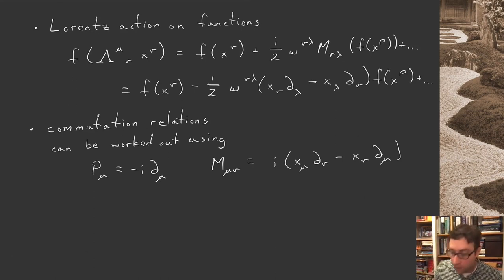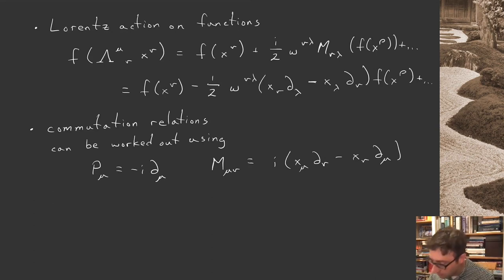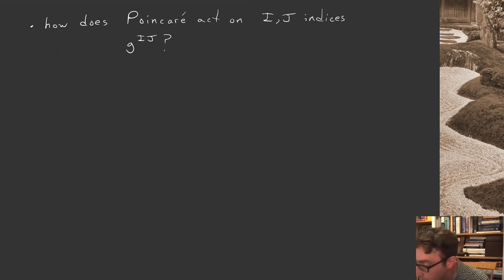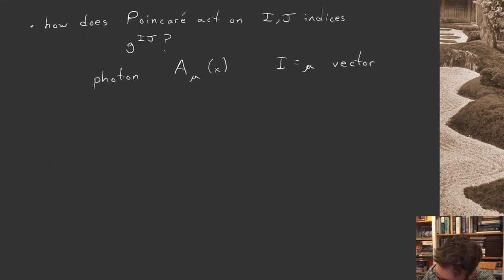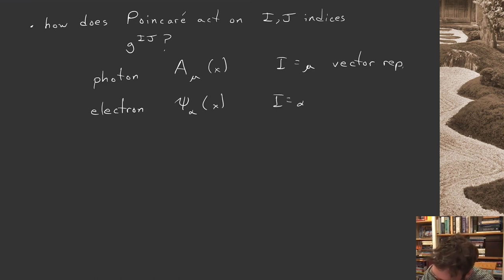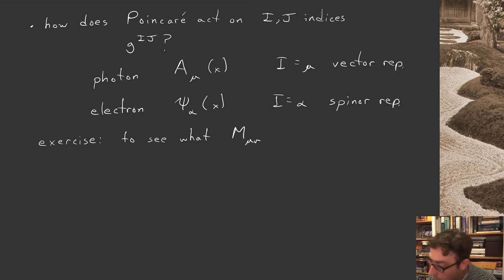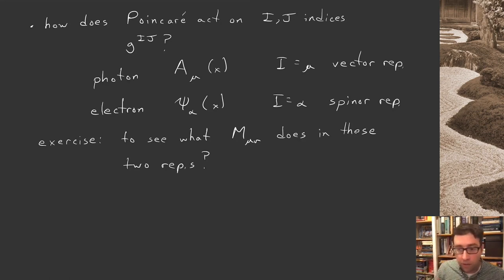This is only how Poincaré acts through the spacetime dependence. We also need to know how Poincaré acts directly on the indices — the matrix G_{ij} from before. This depends on the specific field. For a photon, we have A_μ(x) with a vector index — a vector representation of Poincaré. For an electron, we have a spinor field with a spinor index alpha — a spinor representation. I've left as an exercise to find what M_{μν} looks like explicitly in these two representations.